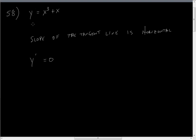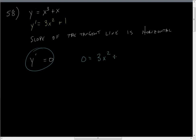So if y is this function, y prime is equal to 3x squared plus 1, since the derivative of x is 1. Now the question is when is this true — in other words, when is zero equal to 3x squared plus 1? Well, this happens when negative 1 is equal to 3x squared, or negative one-third is equal to x squared.